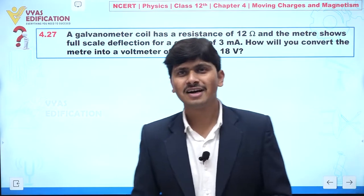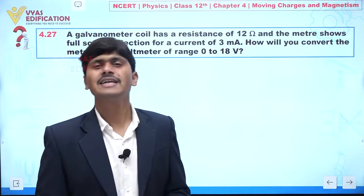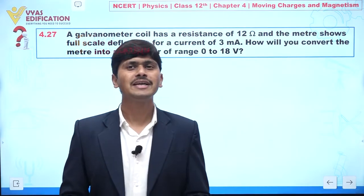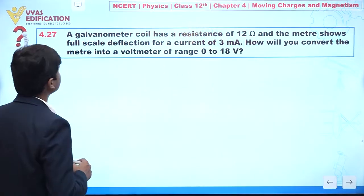Now we are going to solve question number 4.27. This question is related to conversion of a galvanometer into a voltmeter. Concentrate on the screen - in this question, it is given a galvanometer coil has a resistance of 12 ohm.